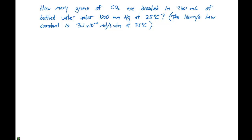Henry's law says that the solubility of our gas is going to equal K, which is the Henry's law constant, times the pressure of the gas. So our Henry's law constant is given as 3.1 times 10 to the minus 2 moles per liter atmosphere, times the pressure of the gas, which is 1900 millimeters of mercury.